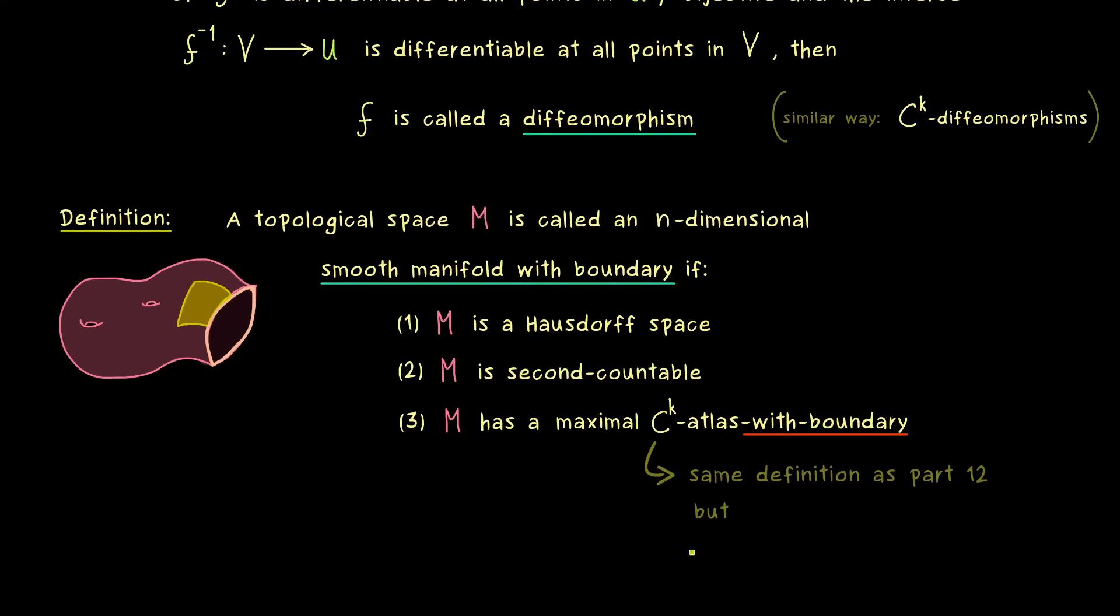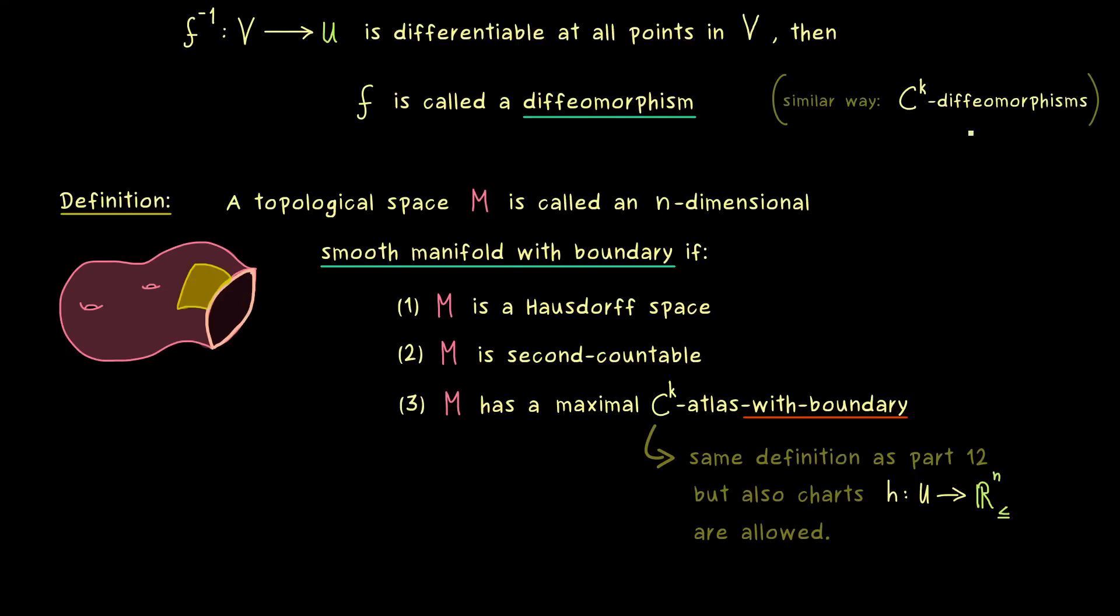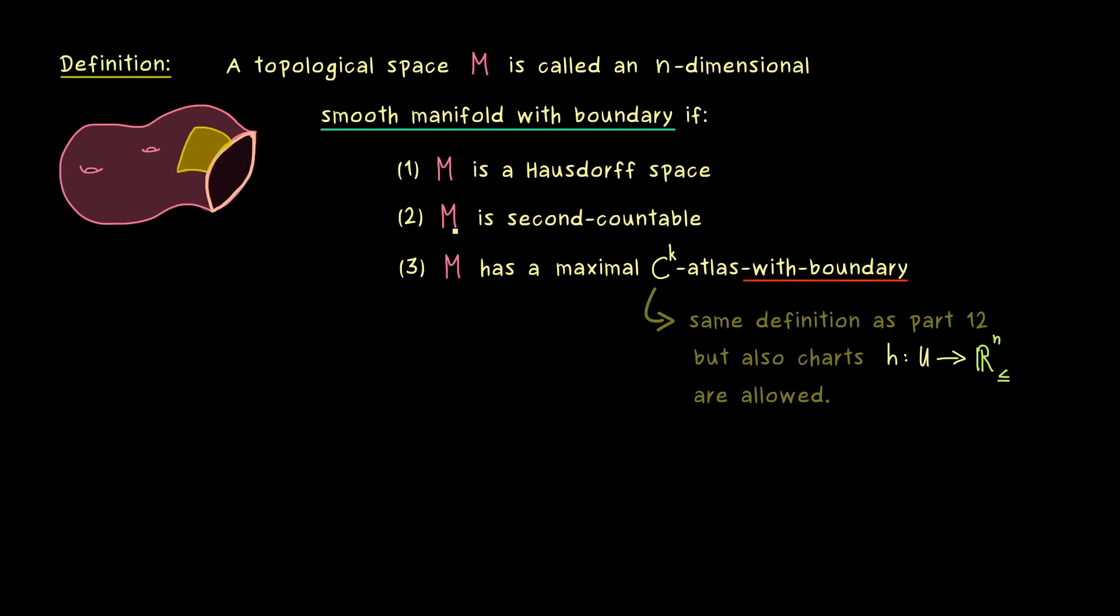In the picture this just means that we also have charts in the atlas that contain the boundary of M. This means the definition of the maximal Cᵏ atlas is exactly the same as in Part 12. The only thing we have to add that also charts that map into the half space are allowed. In fact everything we have discussed in Part 12 still holds. You just have to add that these charts are also possible. And now we know how to deal with that because we know what a Cᵏ diffeomorphism for the transition map is. However, in the case that we have such a smooth manifold with boundary we can also define the boundary.